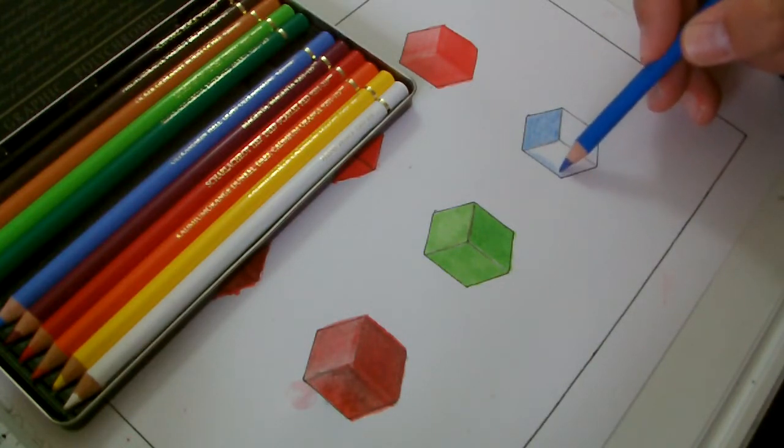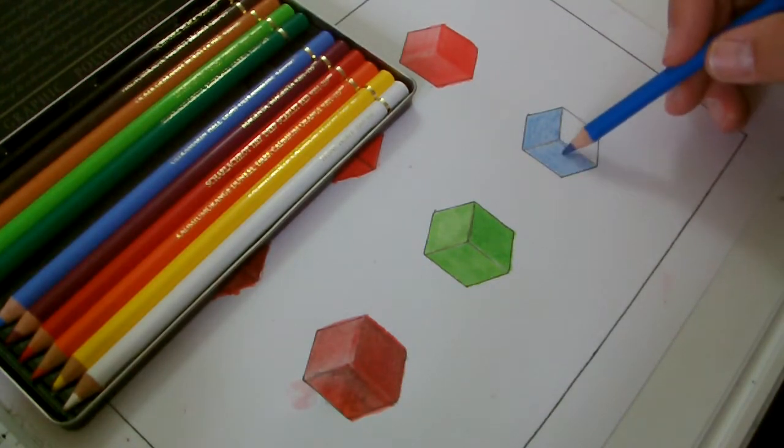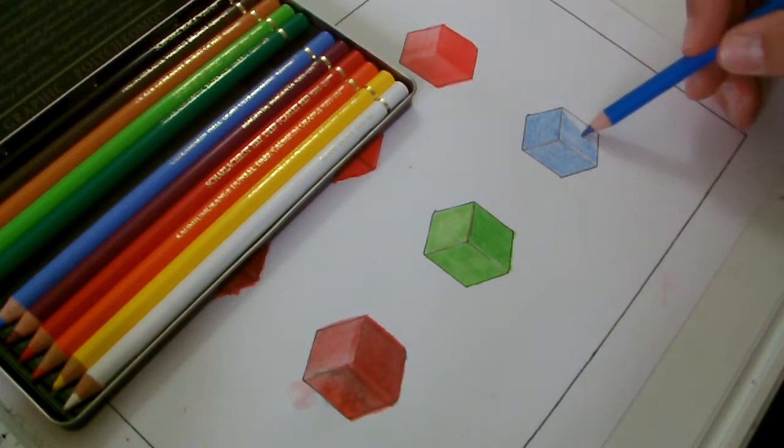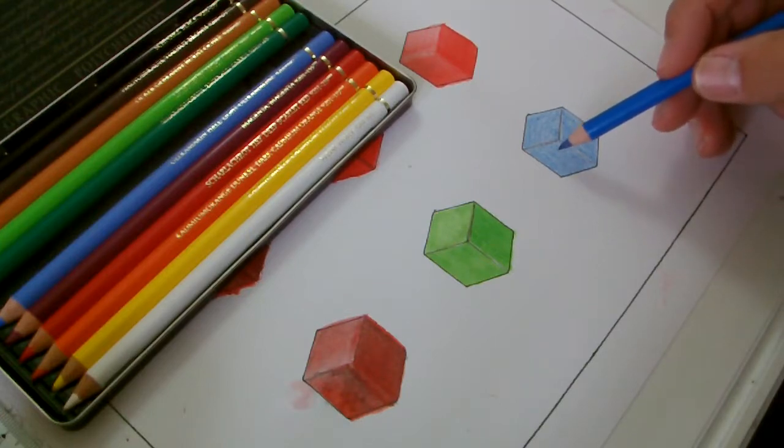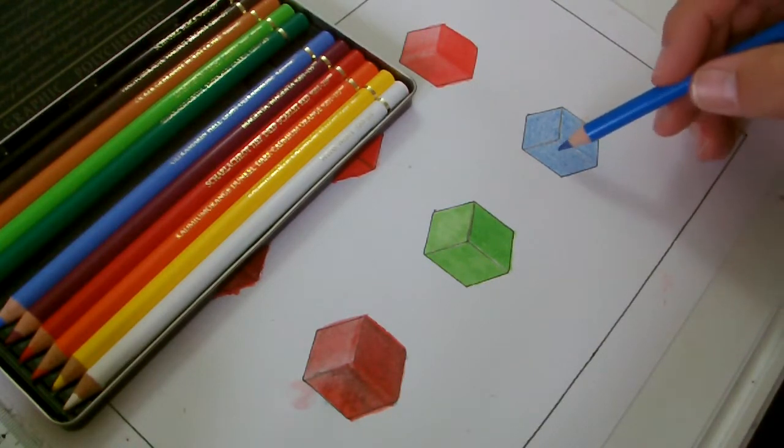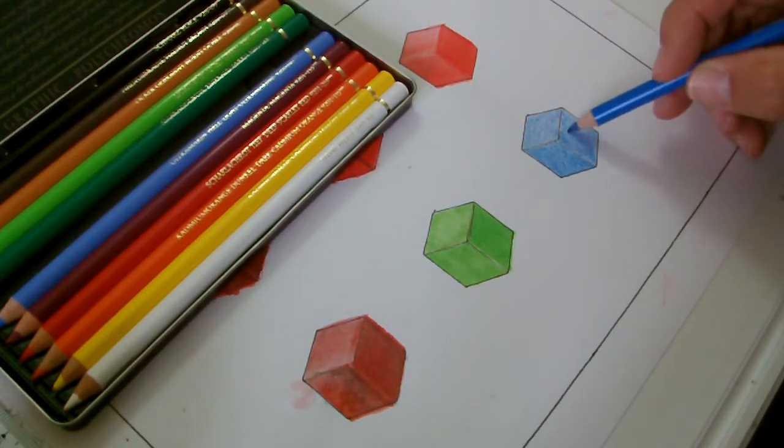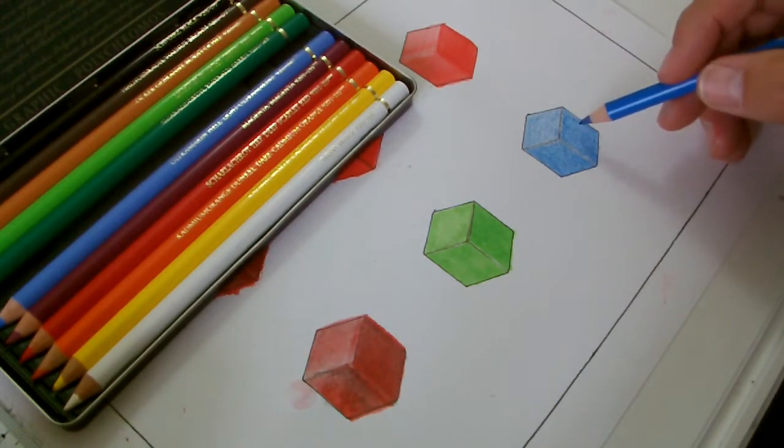What that does, it gives a nice, even coverage. So now all the three sides are the same, roughly. I'm going to now apply another coat, another layer to each of these two sides. Now I'm going to apply a third coat, third layer on this side.